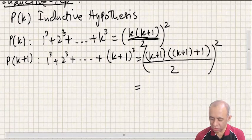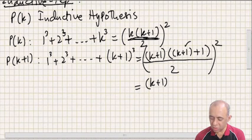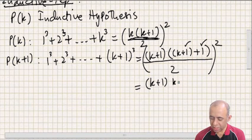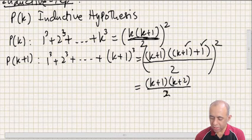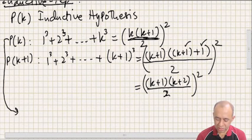Let's work out the right-hand side a little bit more. It will be (k+1) multiplied by (k+2), since we simply add the ones together, giving [(k+1)(k+2)/2]².